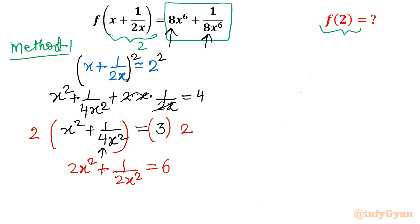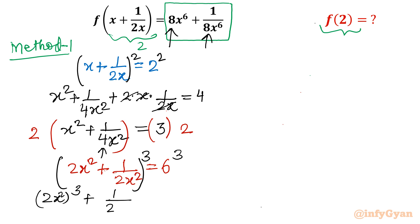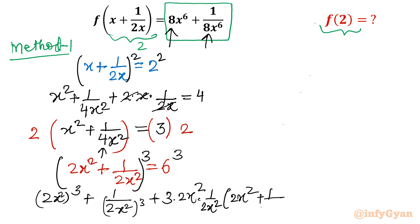So let us take the cube of both sides. Using the formula (a + b)³ = a³ + b³ + 3ab(a + b), where a = 2x² and b = 1/(2x²), I will write (2x²)³ + (1/2x²)³ + 3·(2x²)·(1/2x²) times the bracket (2x² + 1/2x²).